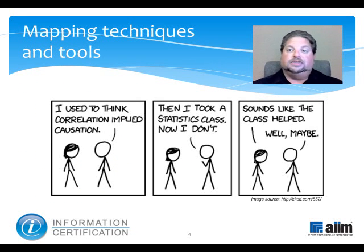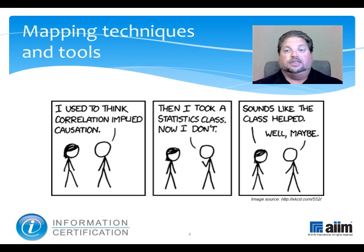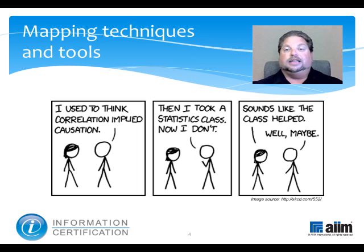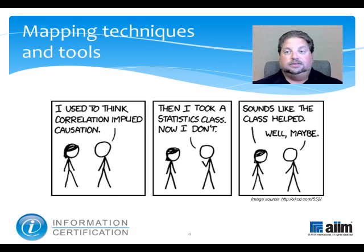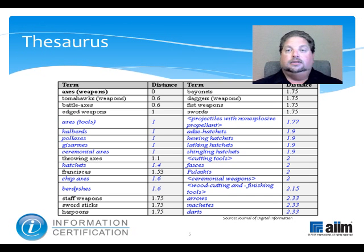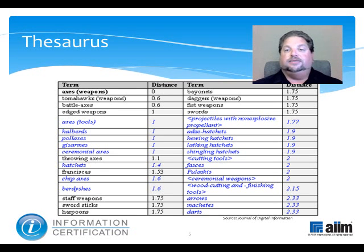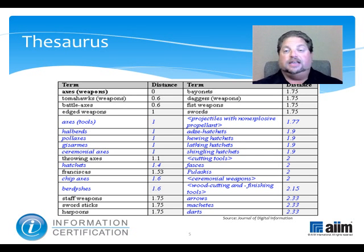Two common tools for achieving this correlation are the thesaurus and the semantic network. While relatively straightforward in theory, they likely will cause you consternation in practice, because the choices you'll have to make seemingly will be without end. A thesaurus is a file that manages and tracks the definition of words and phrases and their relationships to one another in a hierarchical fashion.